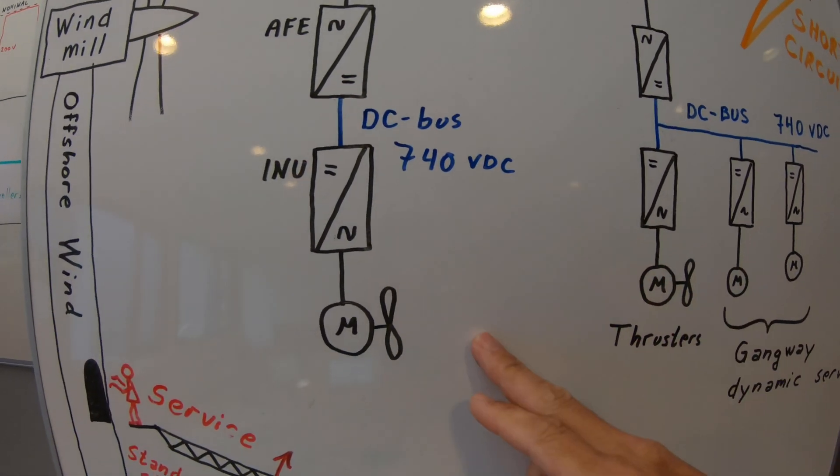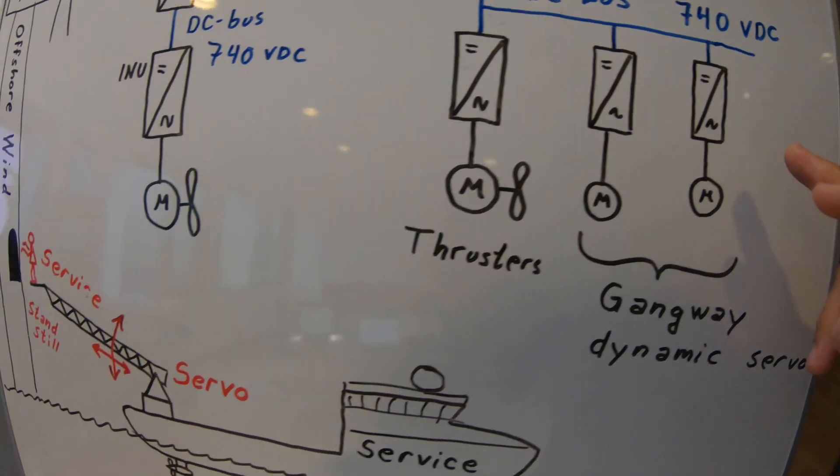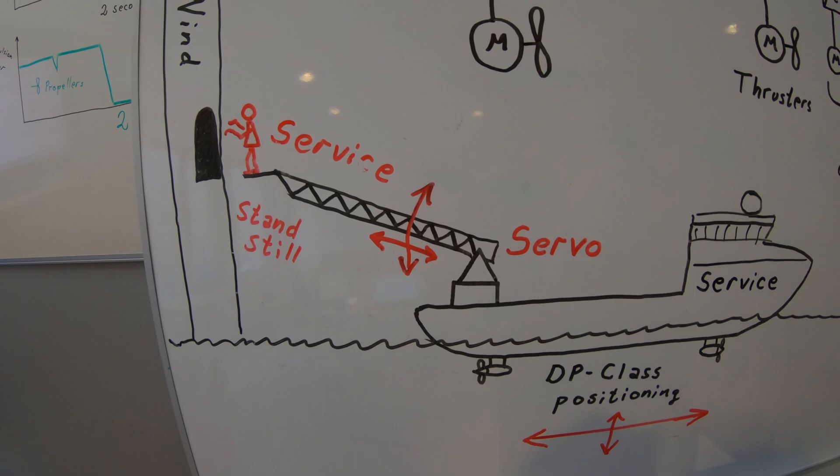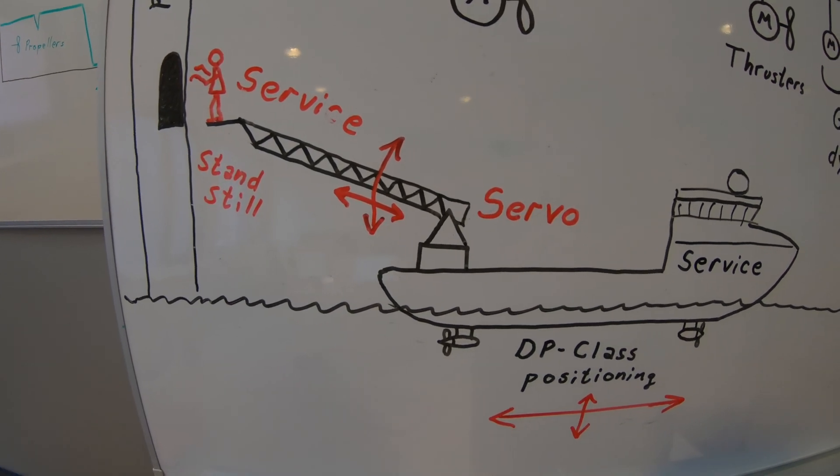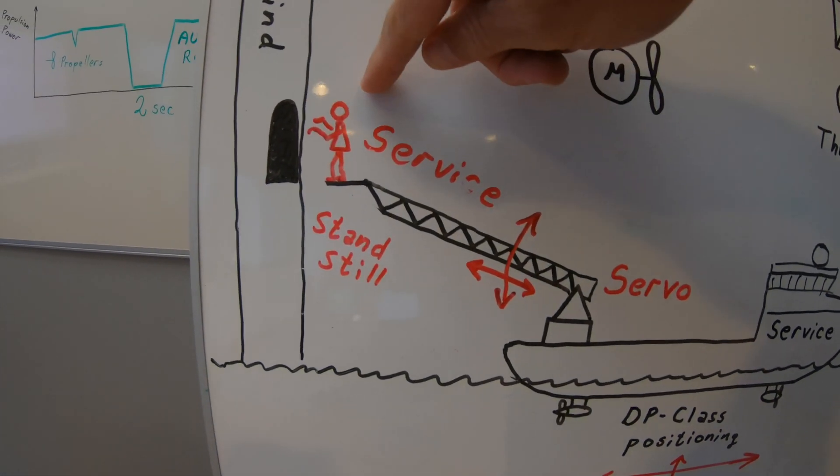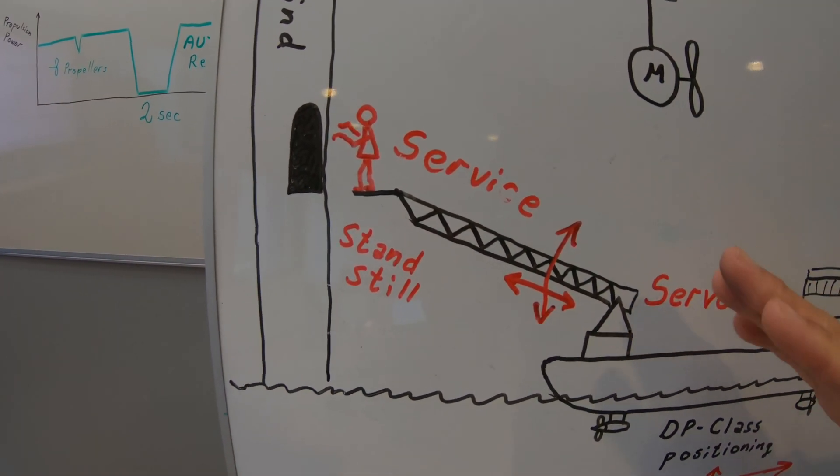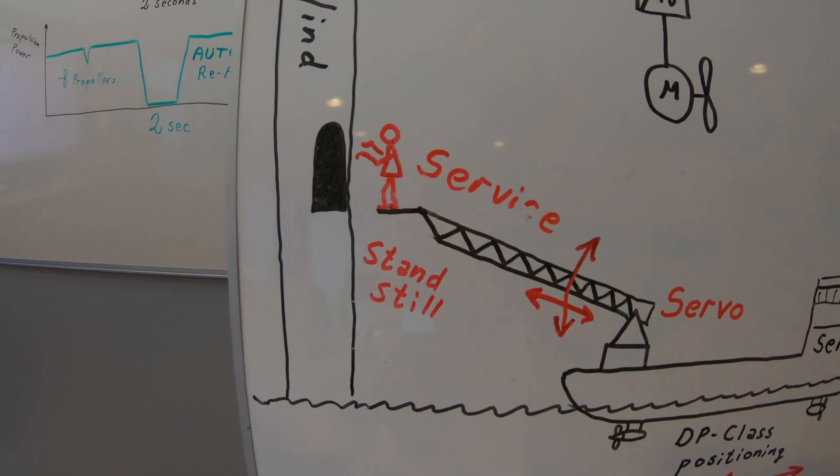What happened in these two seconds? You don't want to lose the propulsion and the gangway functionality for more than maximum two seconds. And it should come back into operation as fast as possible without too much fuss. Imagine what happened with this guy. If you're losing all this functionality, you can risk that the ship start drifting into the windmill.